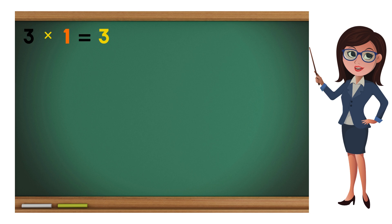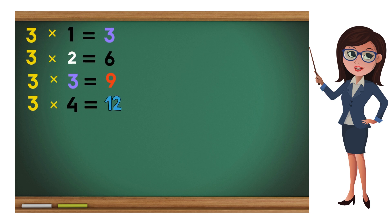The table of 3 goes like this. 3 times 1 equals 3. 3 times 2 equals 6. 3 times 3 equals 9. 3 times 4 equals 12. 3 times 5 equals 15.